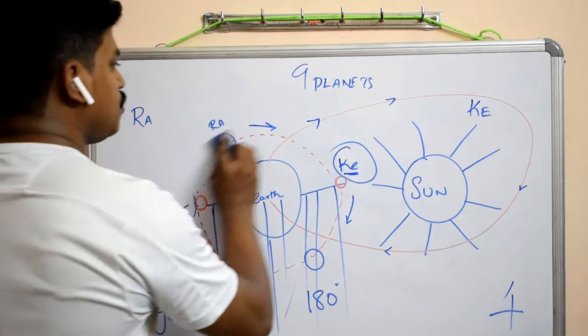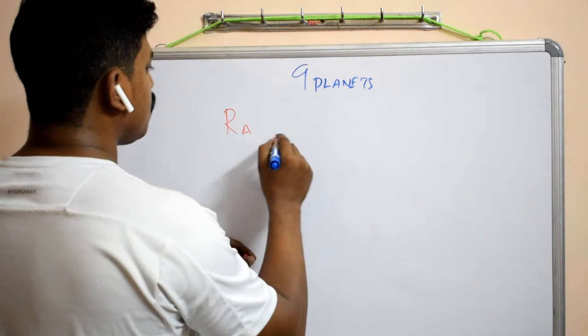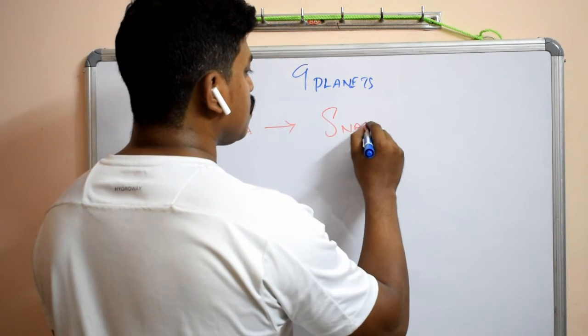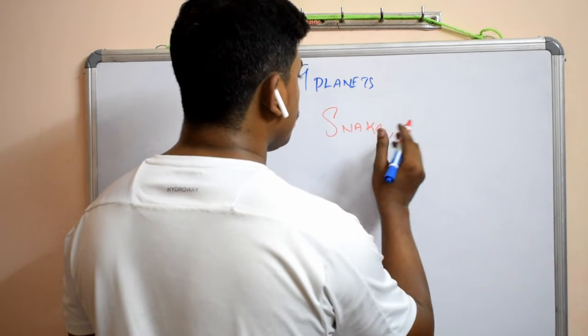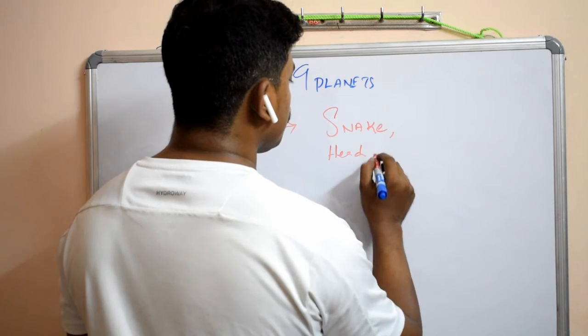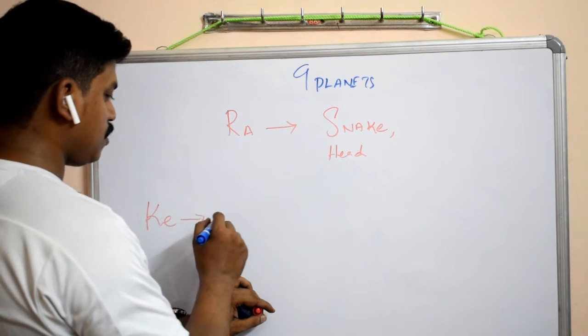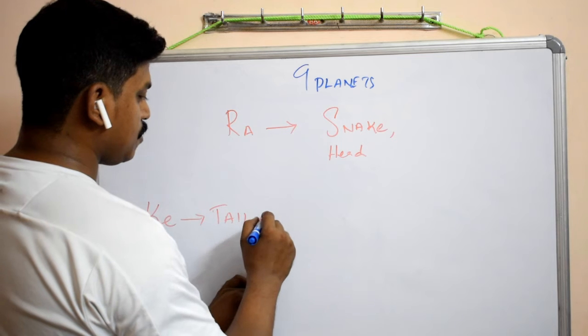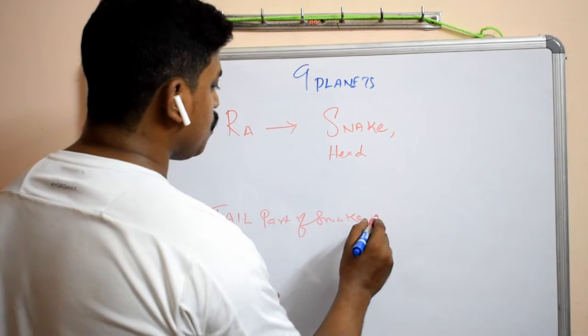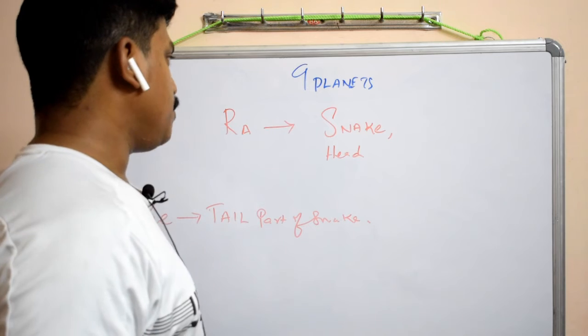For characteristic of Rahu, Rahu has a characteristic of snake. That is the head part of snake and Ketu is tail part of snake. Both are snake character, which is a negative character.